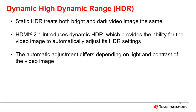HDMI 2.1 features Dynamic HDR, which provides the ability for the video image to automatically adjust its HDR settings. The automatic adjustment differs depending on the light and contrast of the image. For example, a dark video image with some highlights will automatically adjust differently than a bright video image with some low lights.